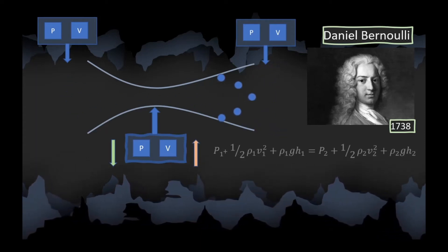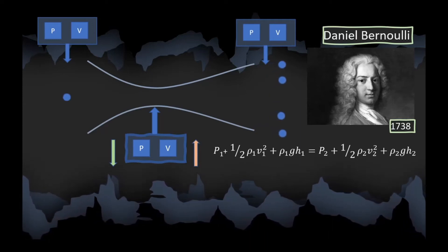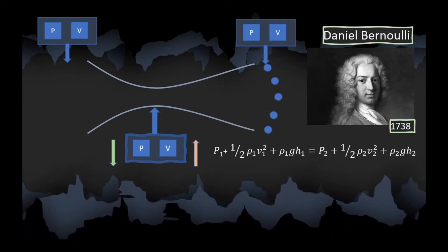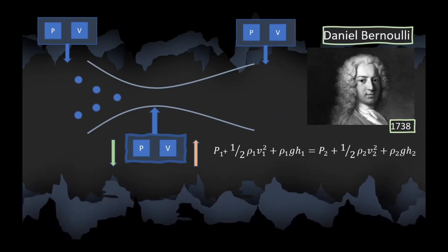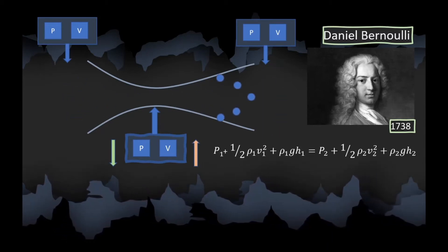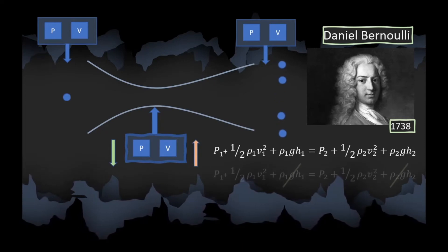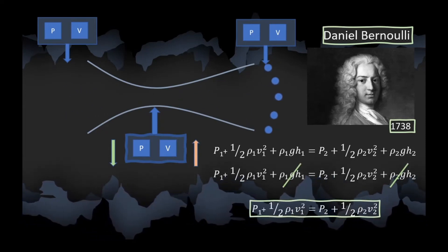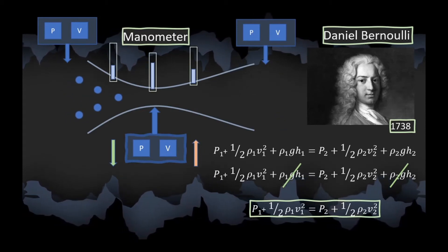Bernoulli came up with an equation now famously called Bernoulli's equation. It is the sum of potential energy and kinetic energy and the pressure energy of the fluid, and the sum is always constant. In our case, there is no potential energy due to gravity and density is constant. He used a manometer to measure the pressure of the fluid at that time.